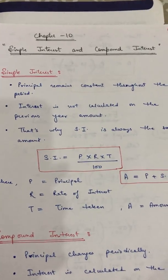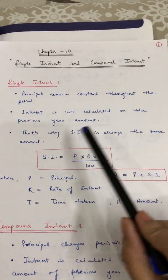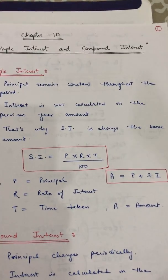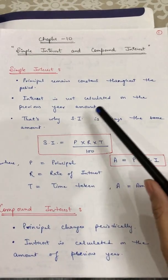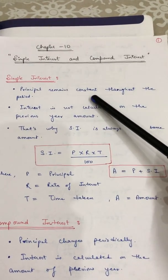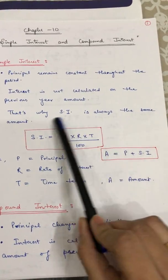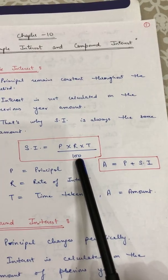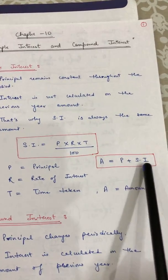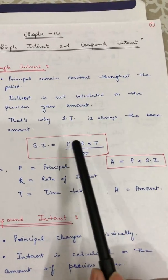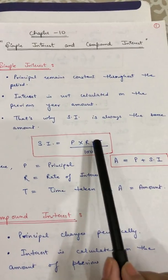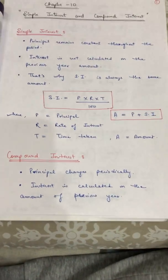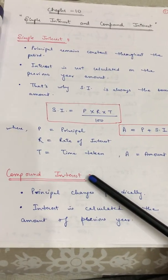That is why simple interest is always the same amount. Whatever interest the bank imposes in the first year will be the same in the last year as well. Throughout the period, your interest and your principal both remain the same. The formula for finding simple interest is: SI = P × R × T / 100. And the amount is equal to principal plus simple interest. Here P is principal, R is rate of interest, T is time, and A is the amount.